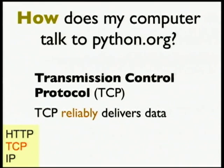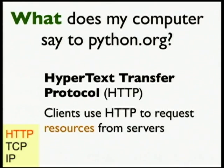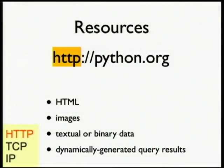TCP: reliable data delivery. It's a pretty good idea. Question number four: we have a reliable channel for communication — what does my computer actually say to python.org? We have a protocol for that as well. This is the Hypertext Transfer Protocol, HTTP, which is what clients use to make requests for resources from servers. When I'm on Firefox, I type python.org and hit enter — my client machine is requesting resources from that destination server. That HTTP colon slash slash is the HTTP protocol describing what that communication looks like.